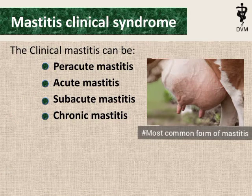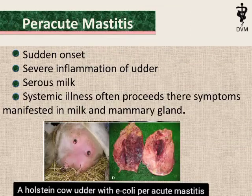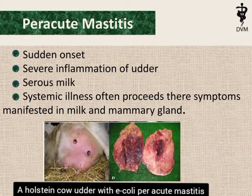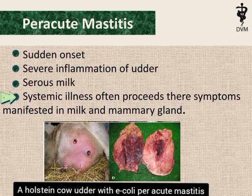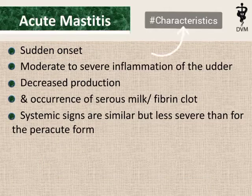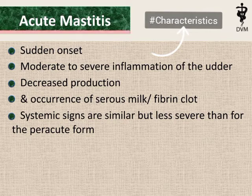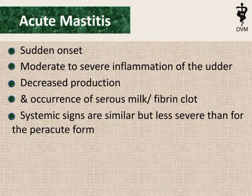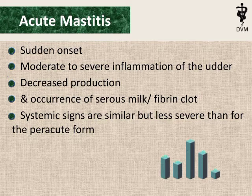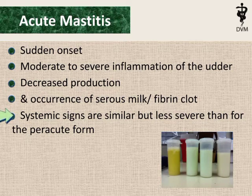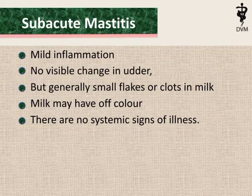Clinical mastitis can be peracute, acute, subacute, or chronic. Peracute mastitis is a sudden and quick response which includes severe inflammation of the udder and milk becomes serous. Systemic illness often precedes symptoms manifested in milk and mammary glands. Acute mastitis characteristics include sudden onset, moderate inflammation of the udder, decreased production, serous-like milk, and systemic illness.